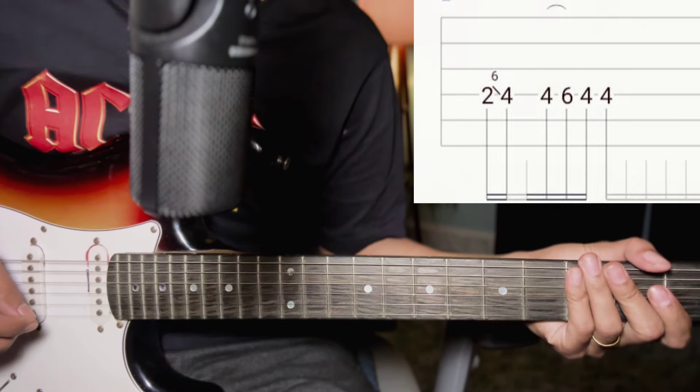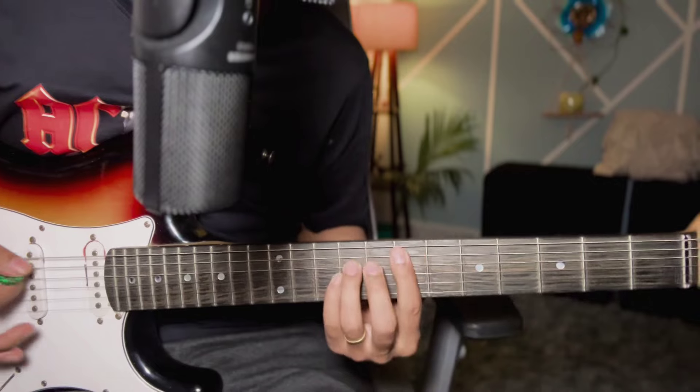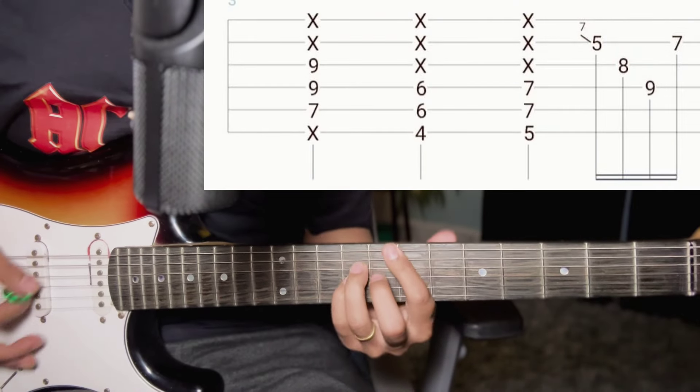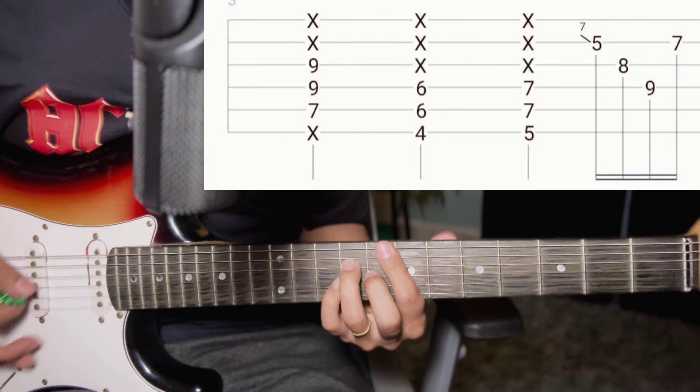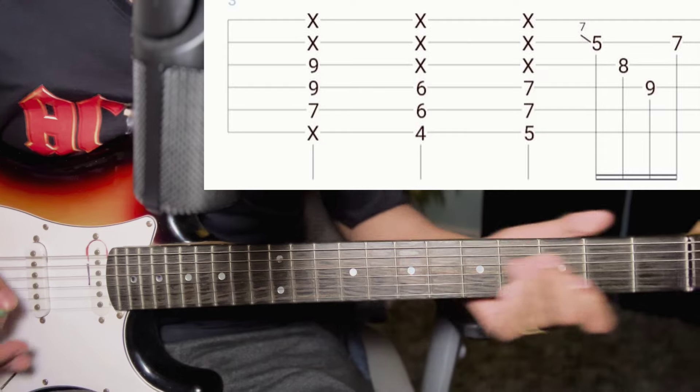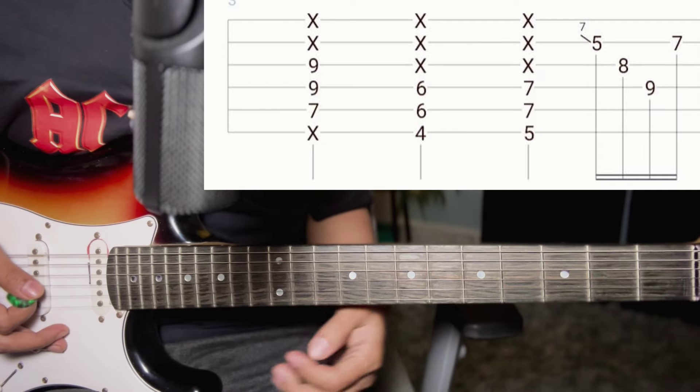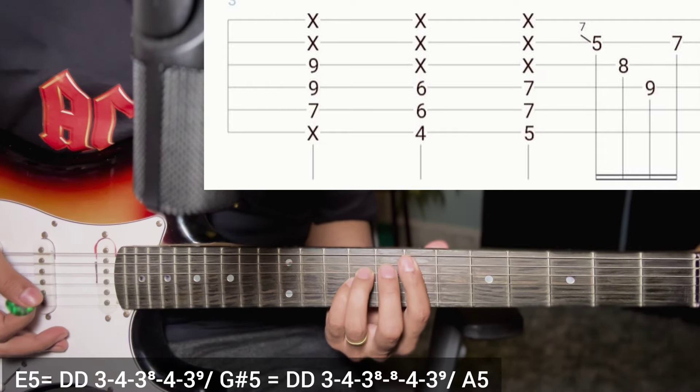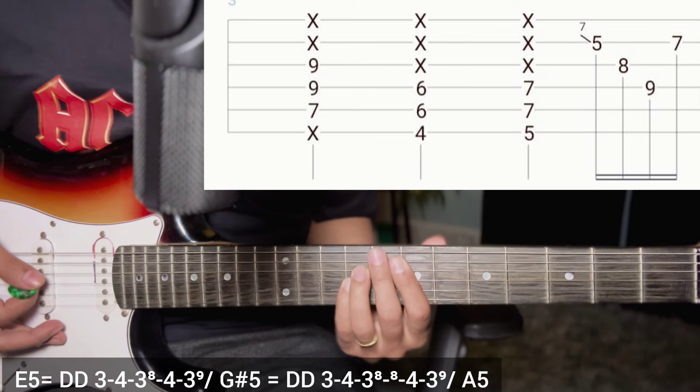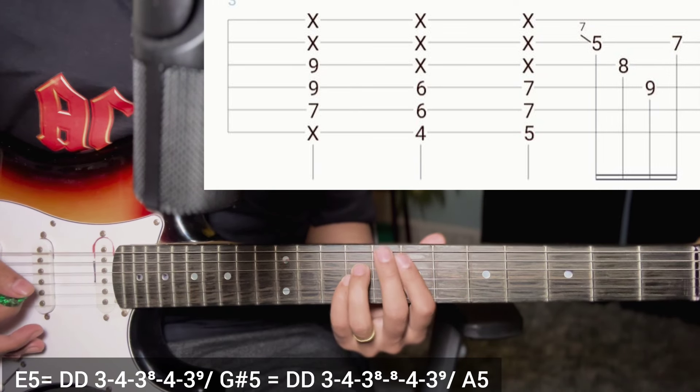After the power chord. The power chord will be first seven fret E5 power chord. Down, down, down, after the rest of the chord.